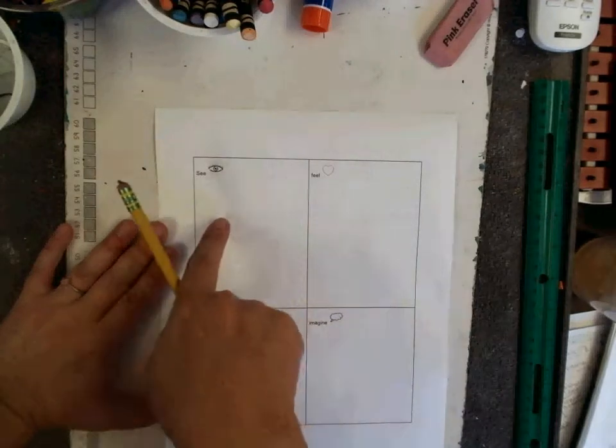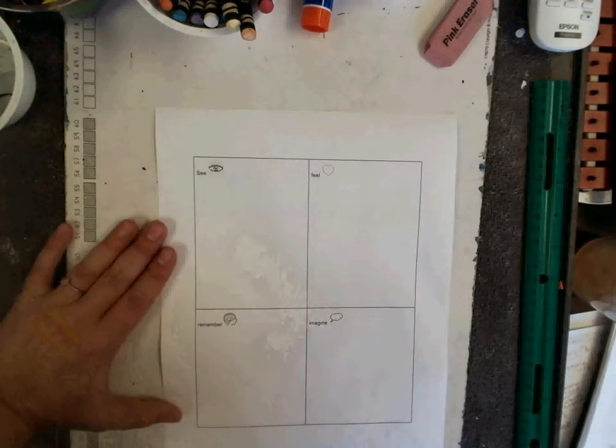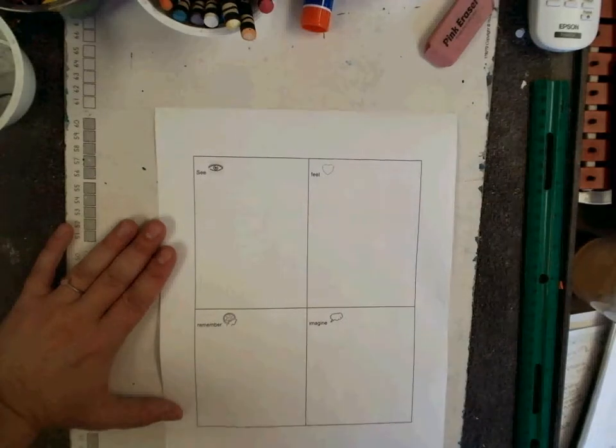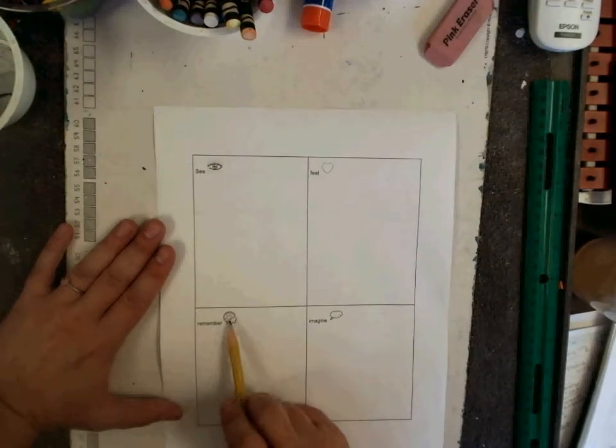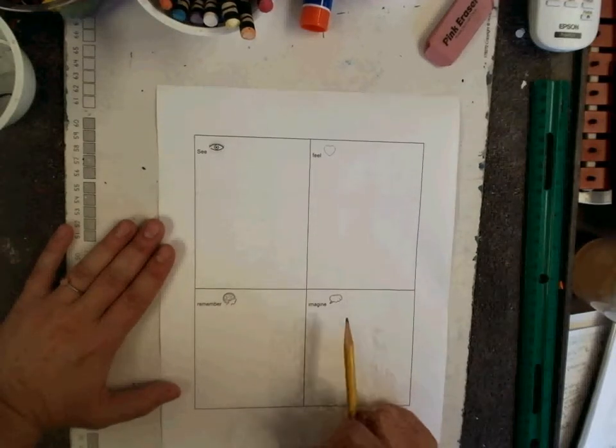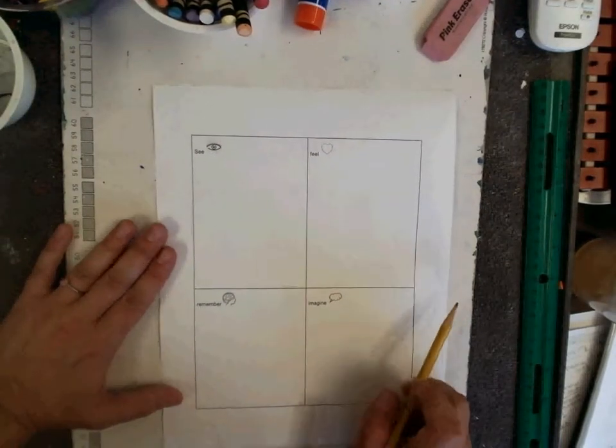Artists draw things they see, things around them, things they feel, like their emotions, things they remember in their brain, like special memories, things they imagine or can create in their head. I see my coffee cup.